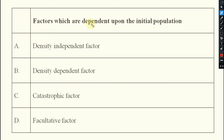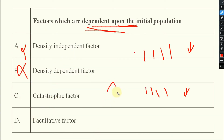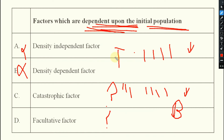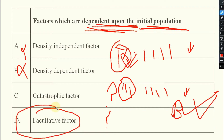Next question: factors which are dependent upon the initial population. If the initial population of the goat is more, what happens to the tiger population — they also increase; if less, they also decrease. You need to know whether it is catastrophic or facultative. If it is dependent upon the initial population, that is your biotic — facultative factor. For abiotic, whatever the initial population of the insect may be, temperature won't affect it — that is your catastrophic factor.